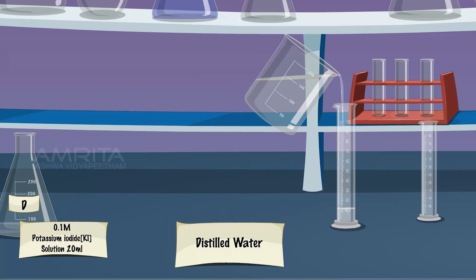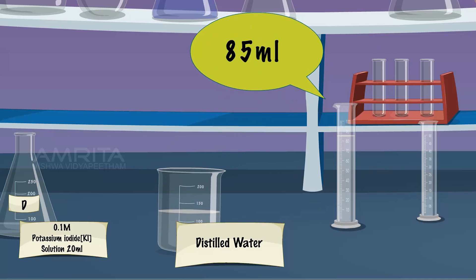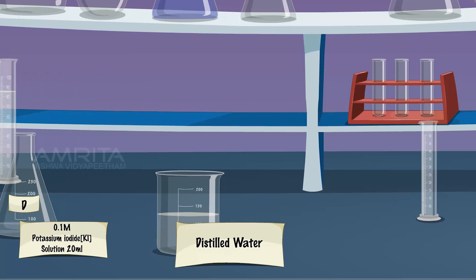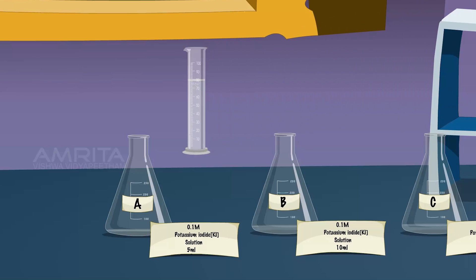Measure 85 ml of distilled water in a measuring jar. Pour it into flask A to make the total volume of the solution 100 ml.